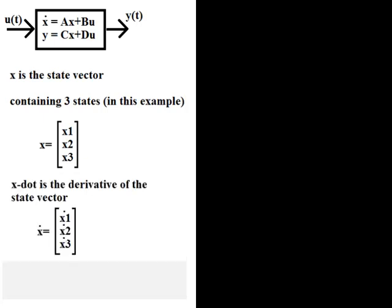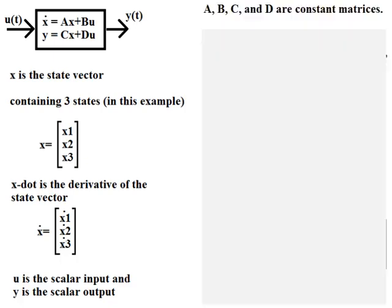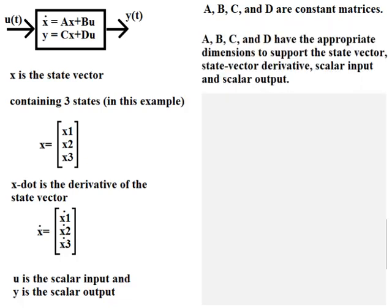X dot is the derivative of the state vector. U is the scalar input and Y is the scalar output. A, B, C, and D are constant matrices. A, B, C, and D have the appropriate dimensions to support the state vector, the state vector derivative, the scalar input, and the scalar output.